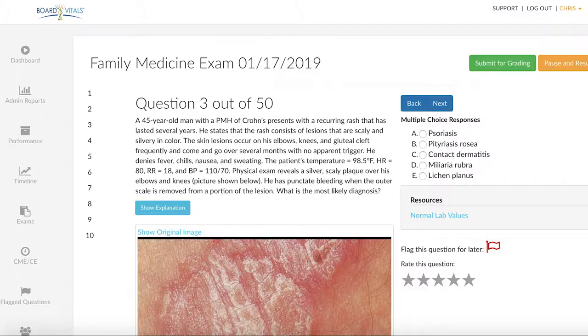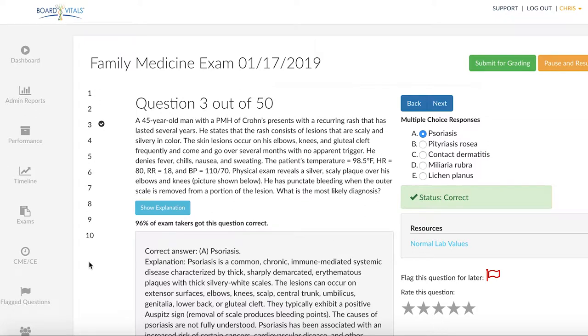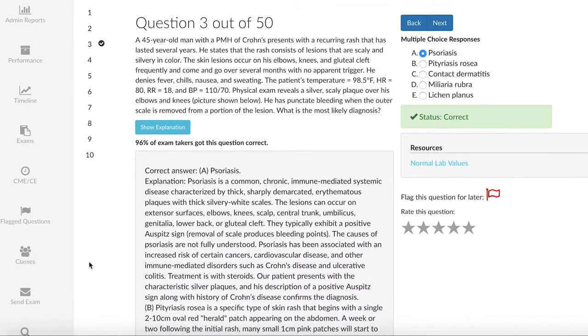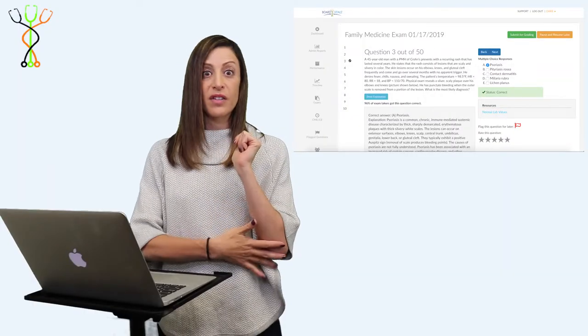Just a little discussion about psoriasis in general and what you might see in an exam question. So it's a chronic inflammatory skin disease. It's characterized by well-demarcated erythematous plaques with a silver scale, and that's the classic finding. They look very much like the picture in this question.